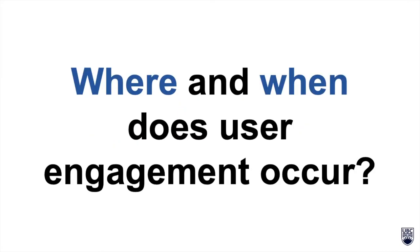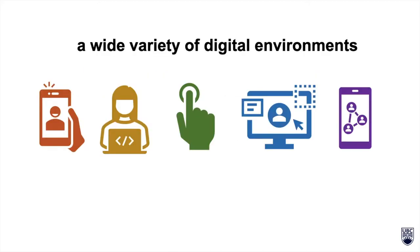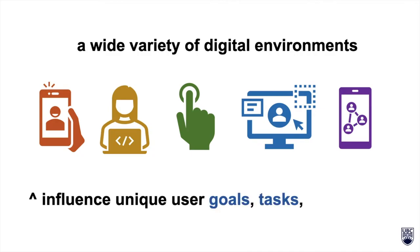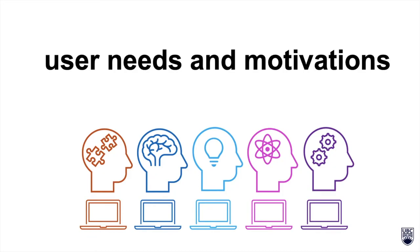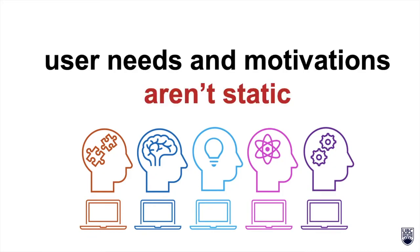Where and when does user engagement occur? Engagement occurs in a wide variety of digital environments. They influence unique user goals, tasks, and outcomes. Furthermore, user needs and motivations aren't static, and understanding the dynamic behavior of different users may help predict and improve digital experiences for specific audiences.